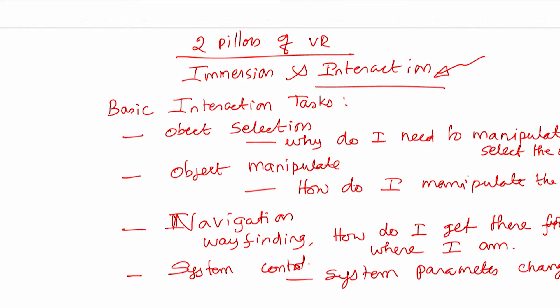For example, we want to change the color of the environment or the way the virtual environment is looking. And then the final way of basic interaction is symbolic input. We want to input text or numbers. These are the different ways in which we are actually interacting with virtual reality.